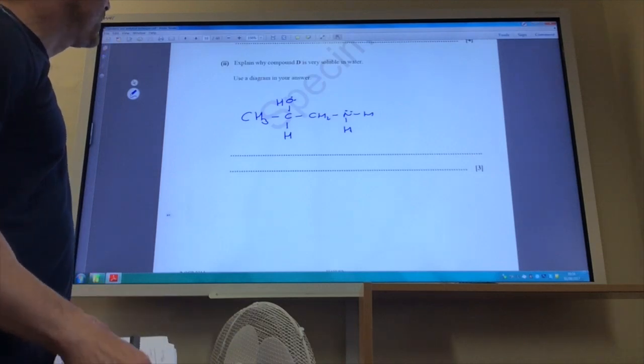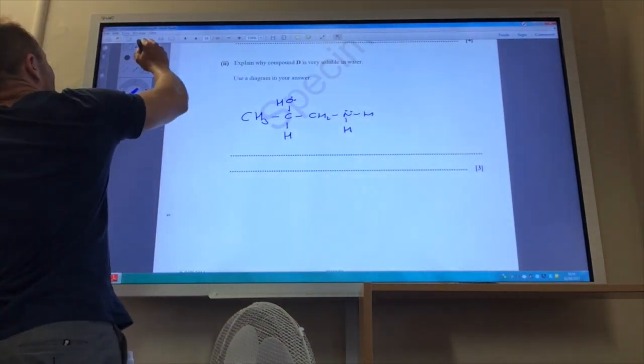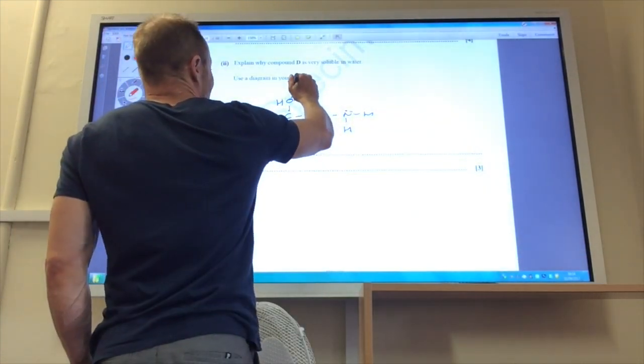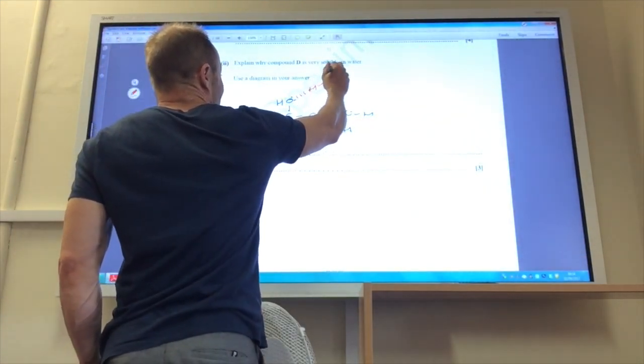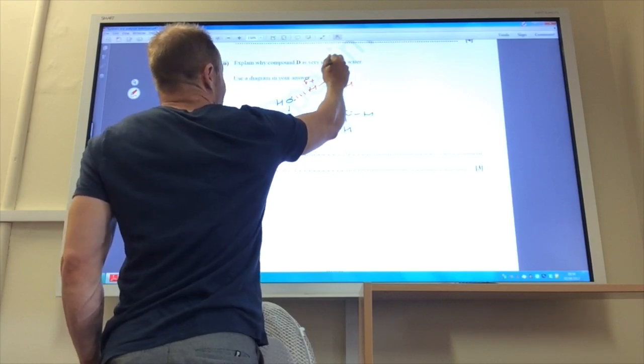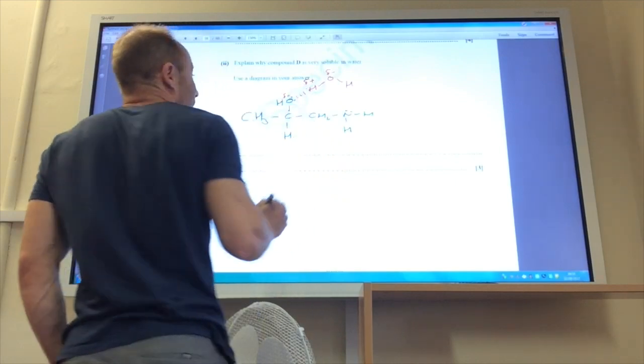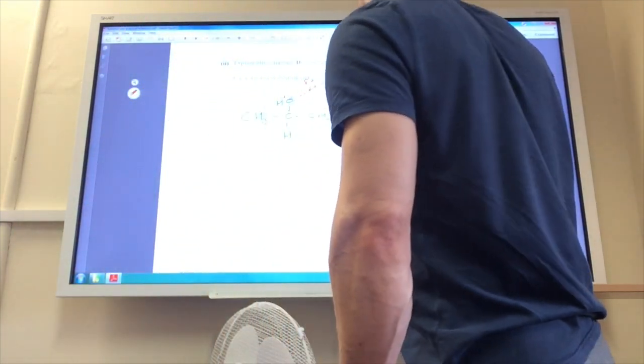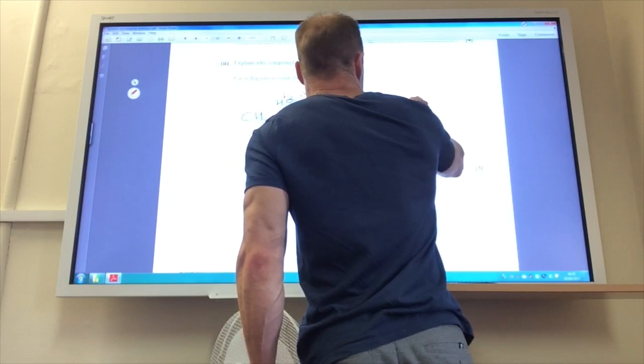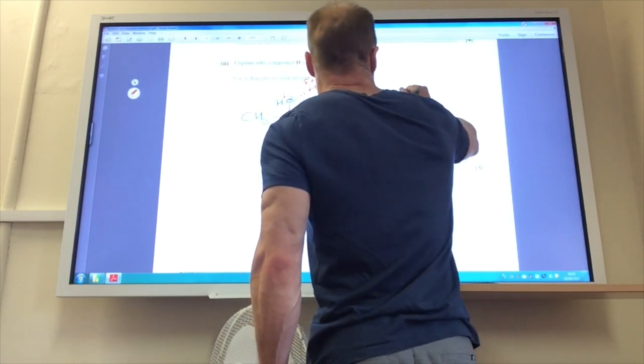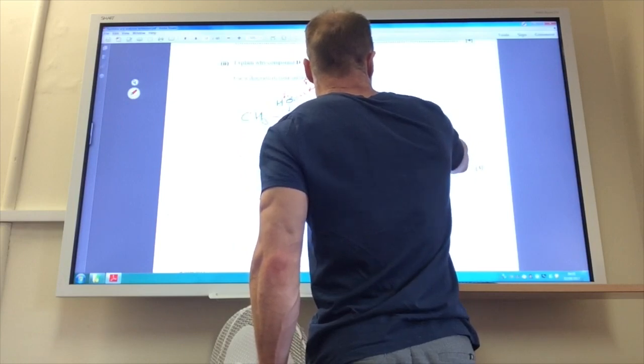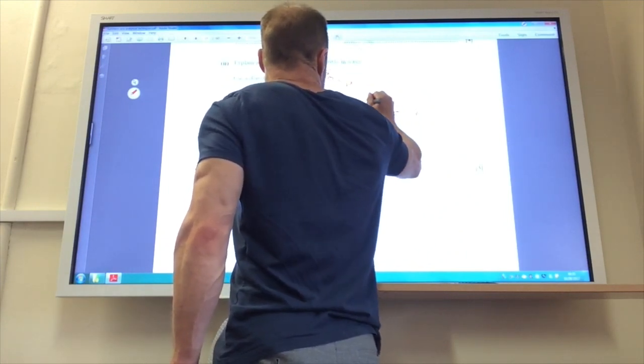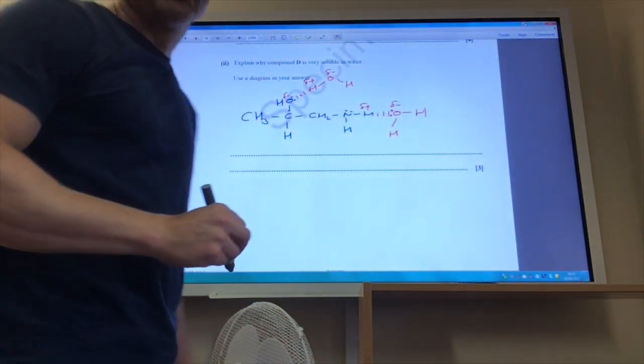Part two: explain why compound D is very soluble with water. I've drawn compound D here, and you can see that compound D can form hydrogen bonds with water. I have got lone pairs on the oxygen there, so if I draw a water molecule there, delta plus, delta minus, that oxygen will be delta minus as well. I've got a nice hydrogen bond there, and of course this could also form a hydrogen bond there. Let's end on a lone pair like so. That's going to be delta plus, that would be delta plus, that would be delta minus on the oxygen, and then I've got another hydrogen bond.